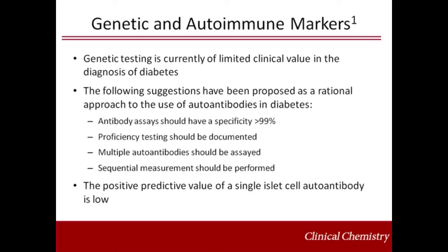However, when used, it is recommended that antibody assays should have a specificity greater than 99%, proficiency testing should be documented, multiple autoantibodies should be assayed, and sequential measurement should be performed. These strategies will reduce false positive and false negative results. While the presence of multiple islet cell autoantibodies is associated with a greater than 90% risk of type 1 diabetes, the positive predictive value of a single islet cell autoantibody is low. Although autoantibody testing is currently of limited clinical value in the diagnosis of diabetes, islet autoantibody testing may be beneficial when type 1 and type 2 diabetes cannot readily be distinguished. Distinguishing type 1 and type 2 diabetes is very important as aggressive insulin replacement therapy at onset may prolong beta cell function in type 1 diabetes.